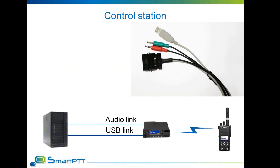A control station is a MotoTURBO radio directly connected to a radio server PC, used for data and voice interconnection with radio subscribers. It uses predefined channels and allows the dispatcher to use the biggest part of MotoTURBO functionality without a direct IP connection. Up to 8 control stations can be connected simultaneously to the radio server PC, each requiring a USB socket and one dedicated audio channel. The connection cable features a USB connector and two audio jacks for input and output.